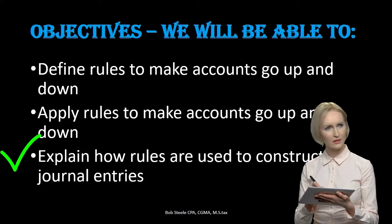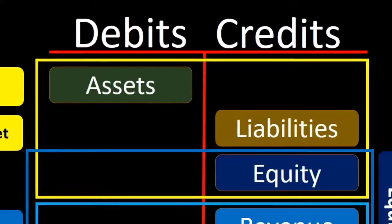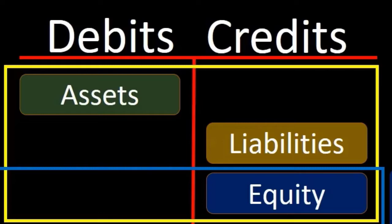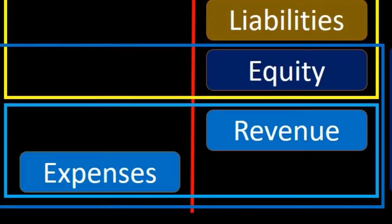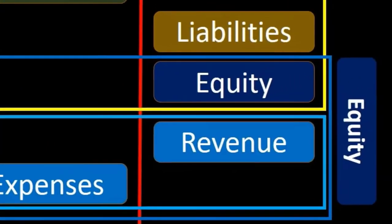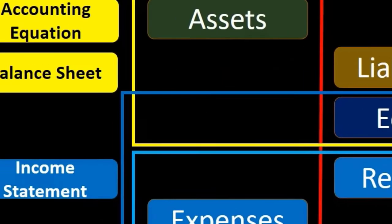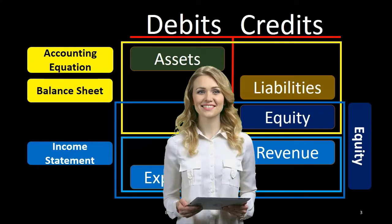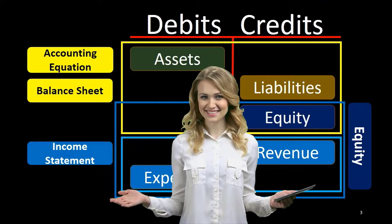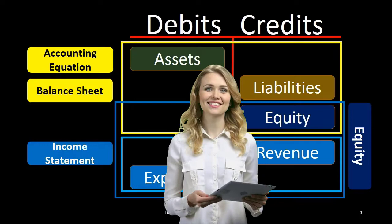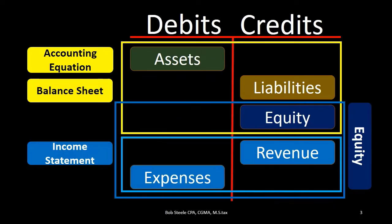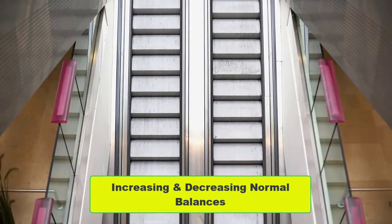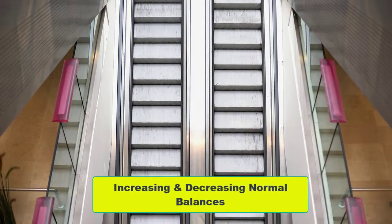and explain how rules are used to construct journal entries. When considering these rules, the rule will be very simple to apply once we understand the normal balances — or have memorized them, or are using a cheat sheet. Once we know what those normal balances are, we're going to want to be increasing or decreasing those normal balances in some way.